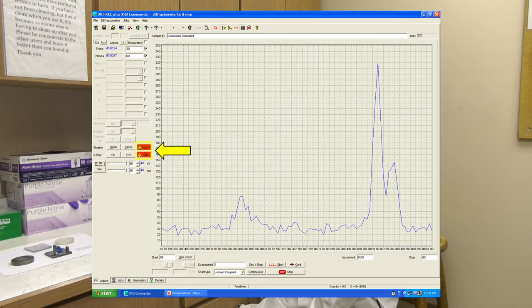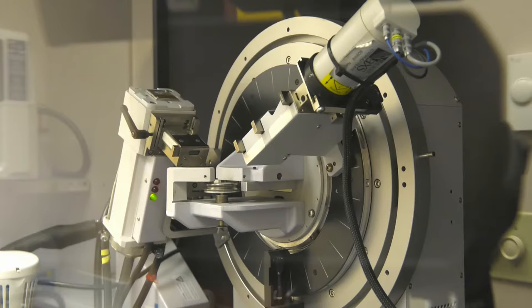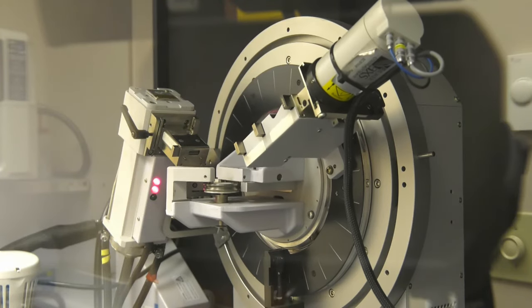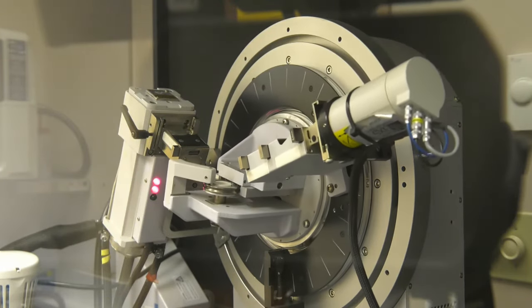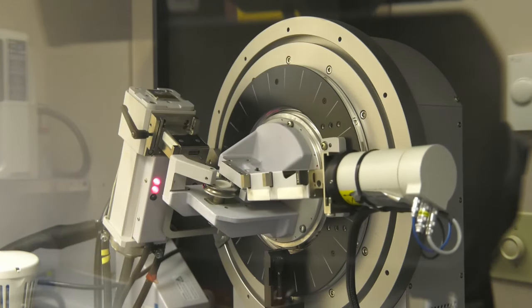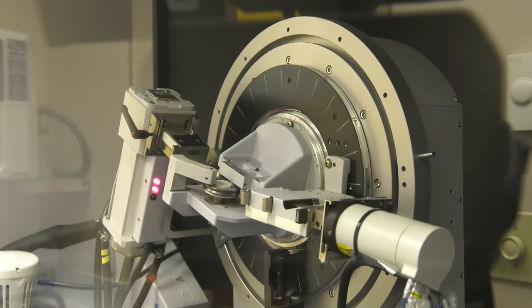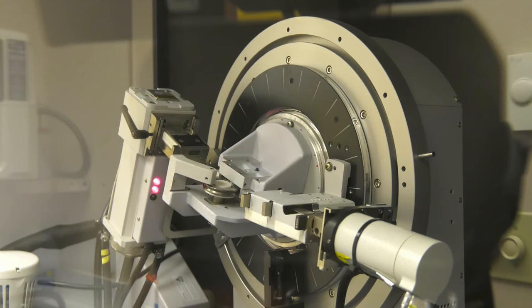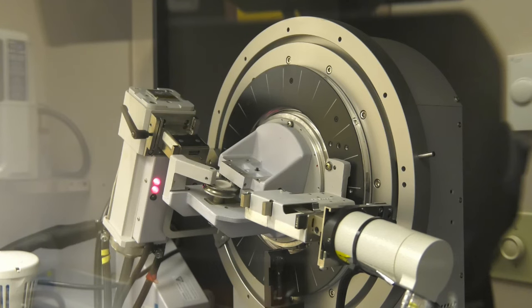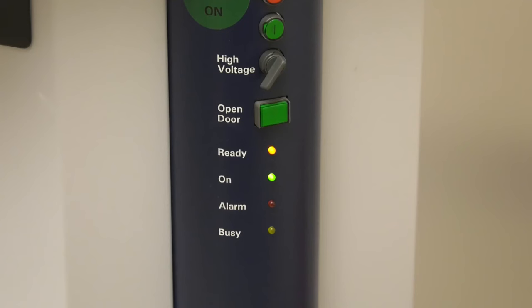This will open the shutter of the X-ray generator and begin the scan. Two red lights are illuminated on the X-ray generator when the shutter is open, and the goniometer moves into its starting theta and 2 theta positions. This goniometer has a stationary X-ray source with moving sample stage and detector, but other XRD instruments may have a stationary sample stage with moving X-ray source and detector. During a scan, the busy light will be illuminated.